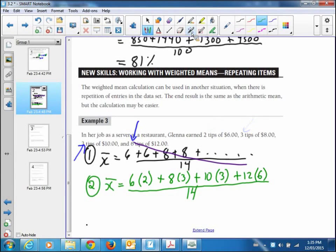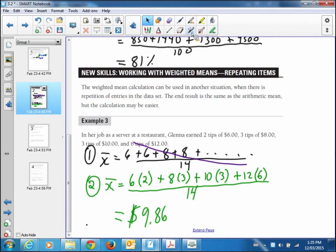Enter that into your calculator. Six times two, plus eight times three, plus ten times three, plus twelve times six. Get a number, and then divide that by fourteen. Her average tip, her mean tip, I guess, is nine dollars and eighty-six cents. So there's the weighted mean for that. I'm going to stop here, and you should be able to try all the questions.